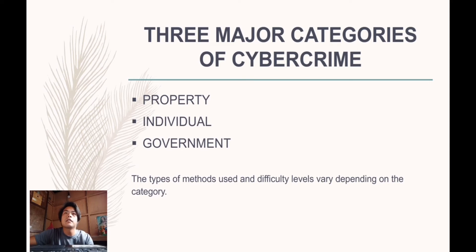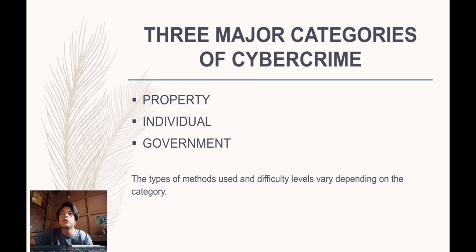Next is government. This is the least common cybercrime, but is the most serious offense. A crime against the government is also known as cyberterrorism. Government cybercrime includes hacking government websites, military websites, or distributing propaganda. These criminals are usually terrorists or enemy governments of other nations.